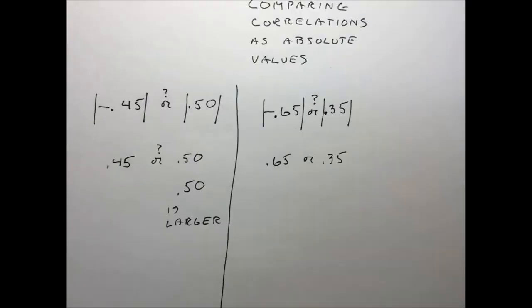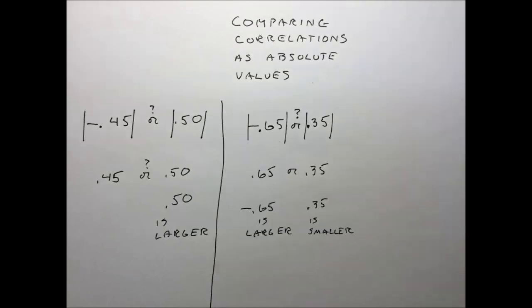Do you see what the problem has turned into? It's really very simple right now. And so of course minus 0.65 is the larger and 0.35 is the smaller because you're really considering their absolute values.